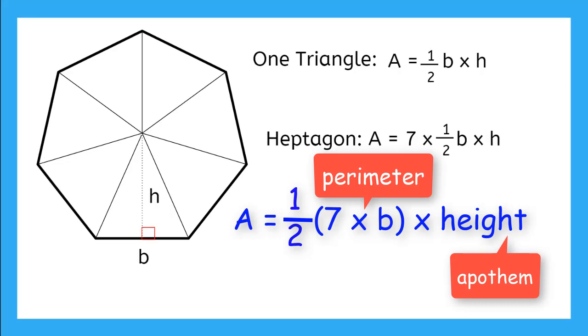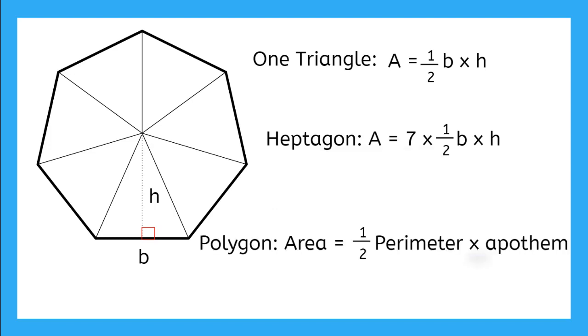So now that I know this, I can rewrite my formula for the area of a heptagon for any polygon. The area of a polygon is 1 half times the perimeter times the height, or the apothem.